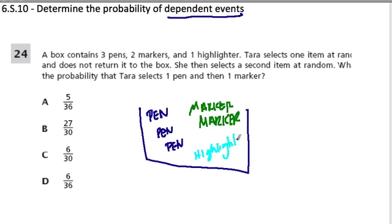Two markers and one highlighter. Okay, so what do we want to know? Tara selects one item at random and does not return it—that's called without replacement. She then selects a second item at random. What is the probability that Tara selects one pen and then one marker?